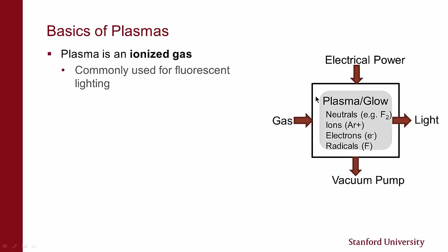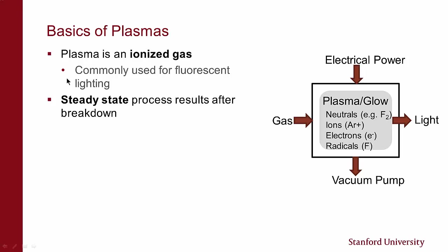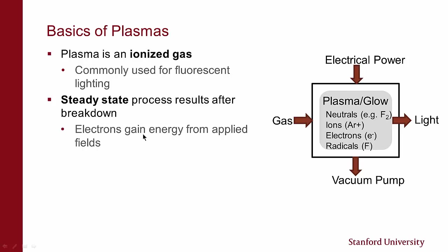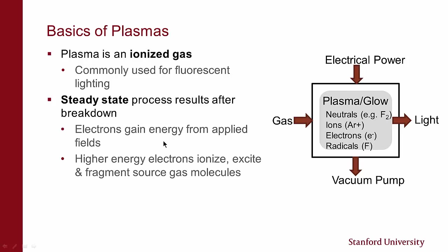I show gases coming in and gases going out by way of the vacuum pump. I see light coming out, and in the plasma I have neutrals, radicals, the initial gases, multiple ions, and electrons. Plasmas are a steady state process that results after gas breakdown. The electrons gain energy from the applied RF field, and the higher energy electrons through collisions will cause ionization, excitation, and fragmentation of our source gas molecules.